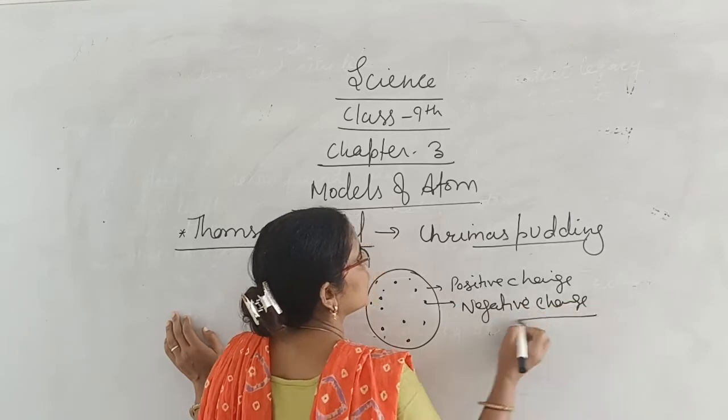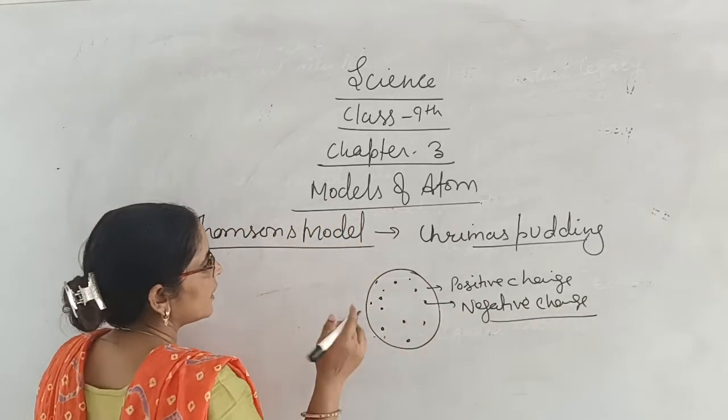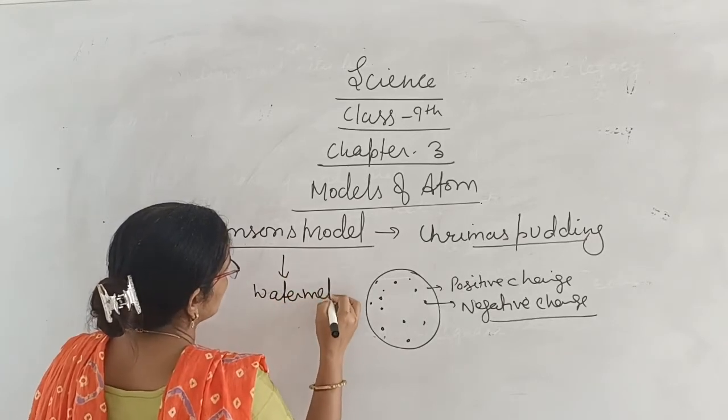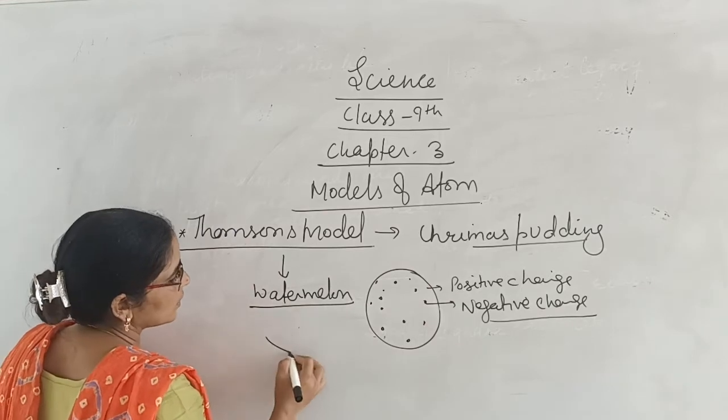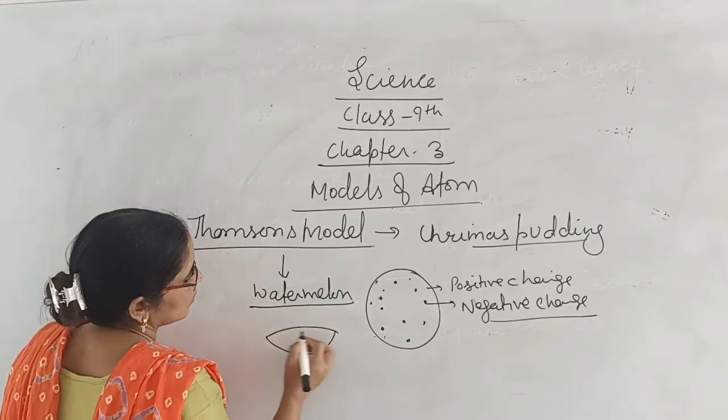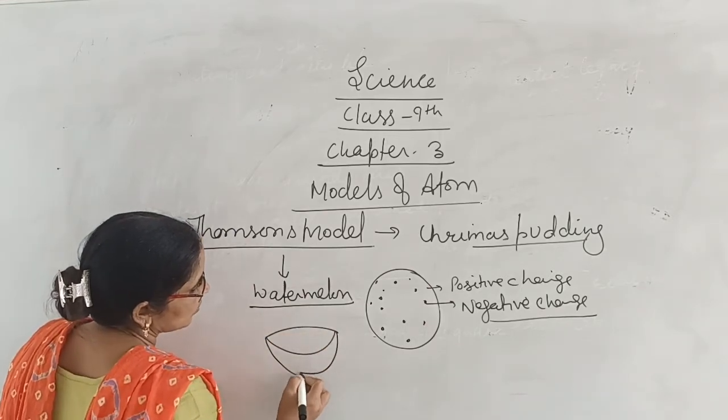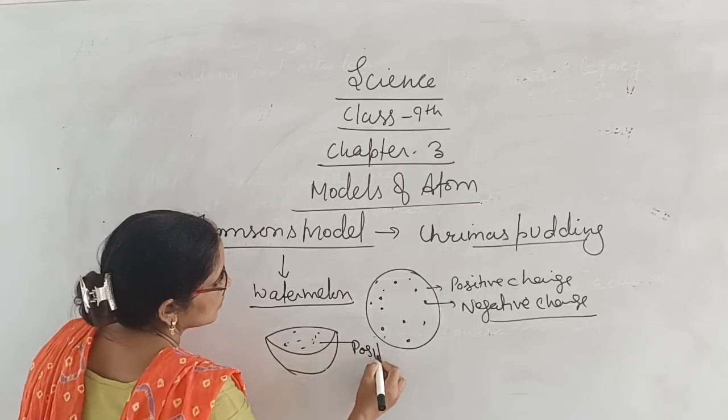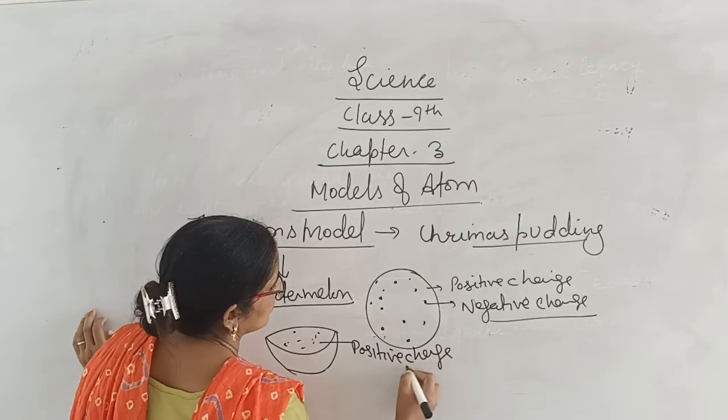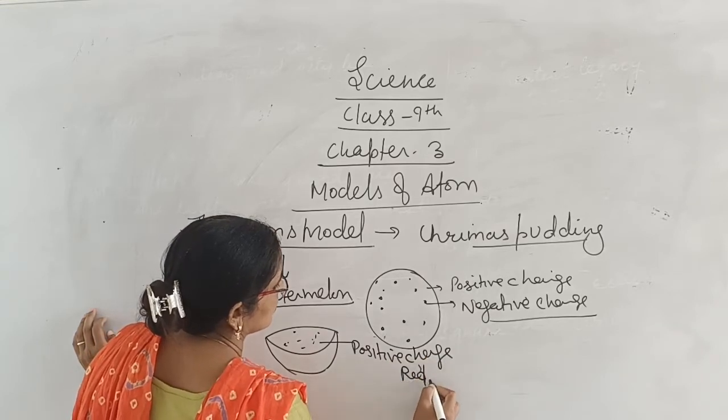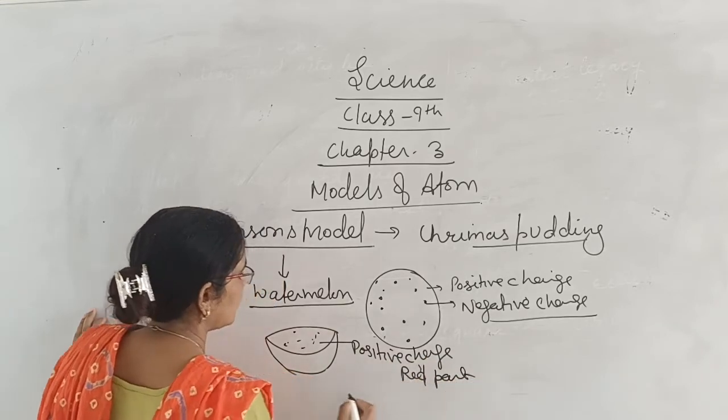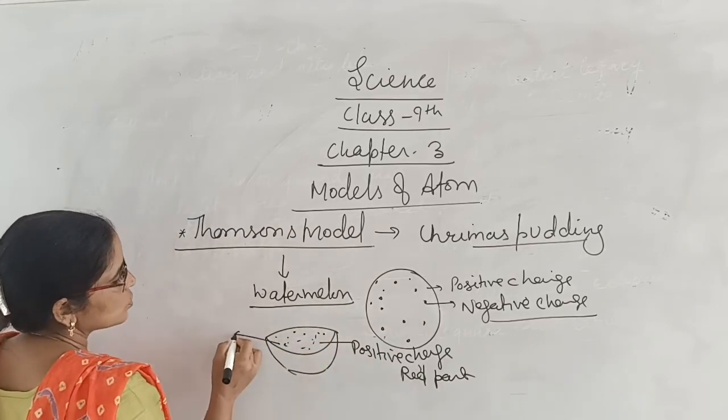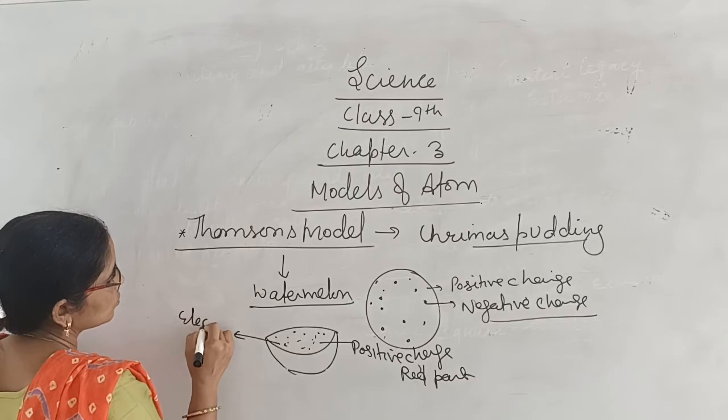He also compares this model of atom with watermelon. The watermelon's red part is of positive charge, whereas the seeds embedded in the red juicy part are electrons or negative charge.